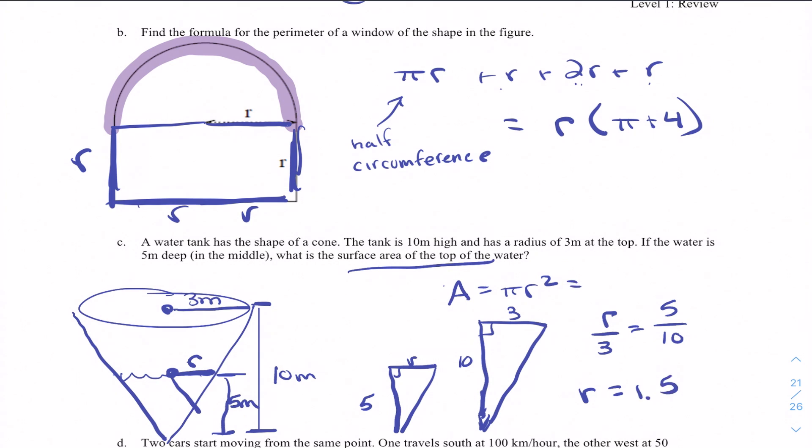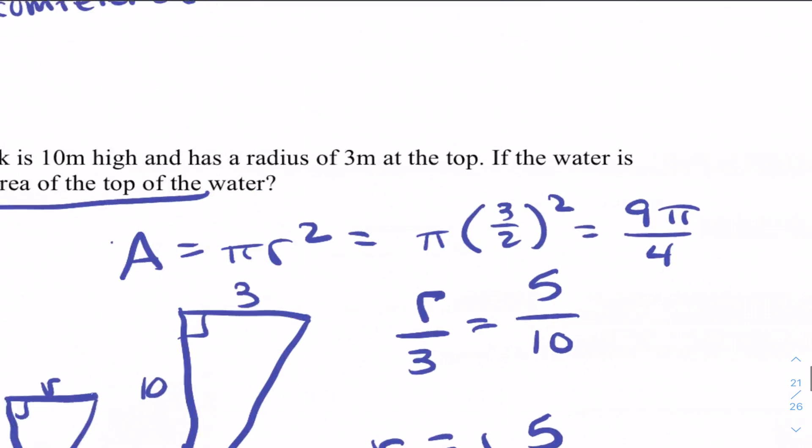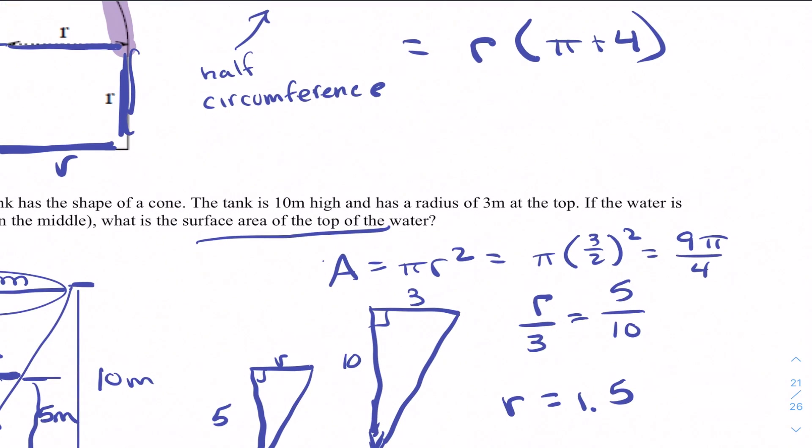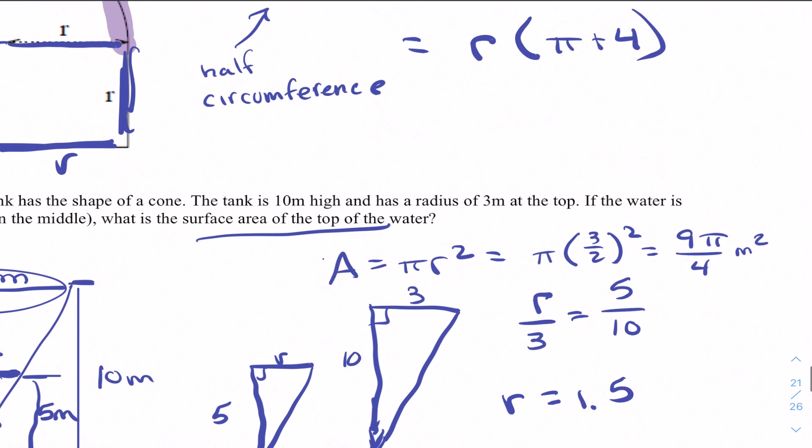Now once we solve that, all we have to do is plug it into our formula. So it would be pi times 3 over 2 squared, which is 9 pi over 4. And we're talking about the surface area, and this is in meters squared. So we provide our units.